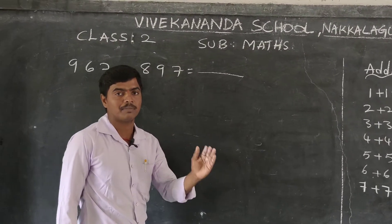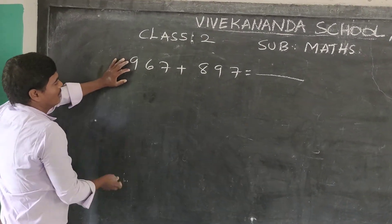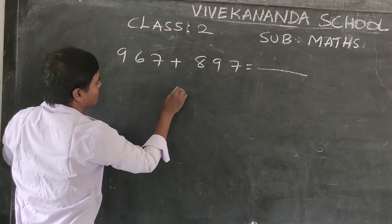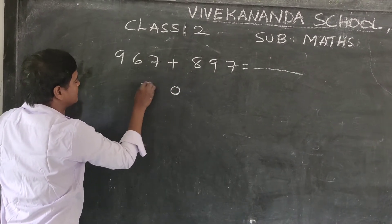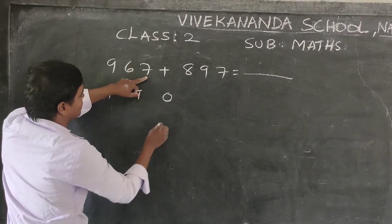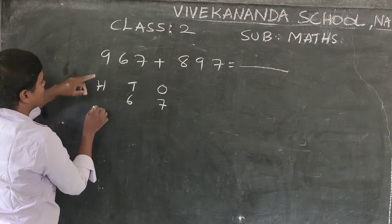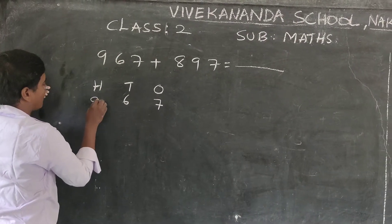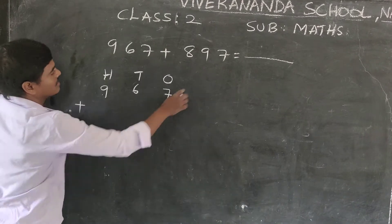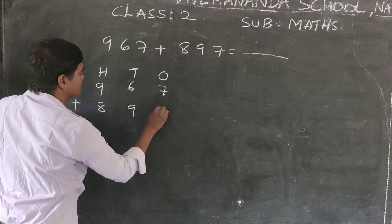Now addition of 3-digit by 3-digit using a different method. First of all, we expand: once, tens, hundreds — so 967 plus 897. Write them in the ones, tens, hundreds positions.